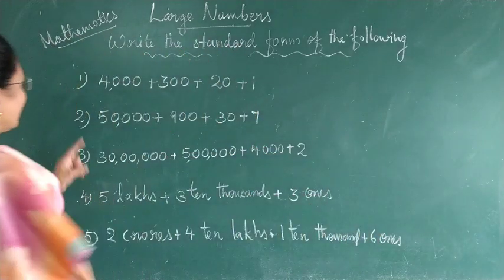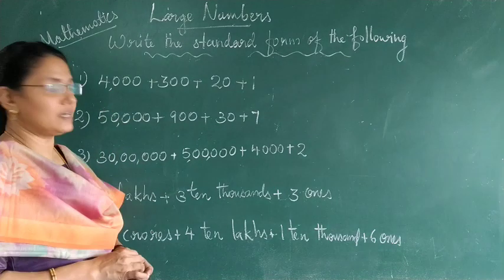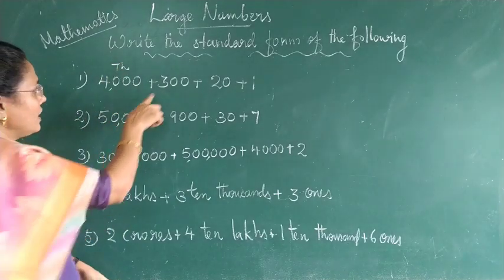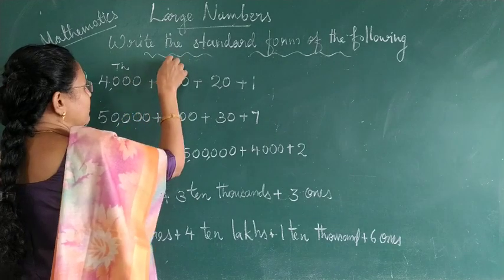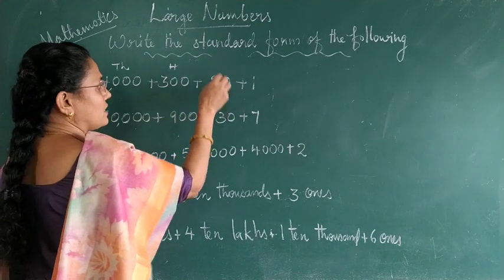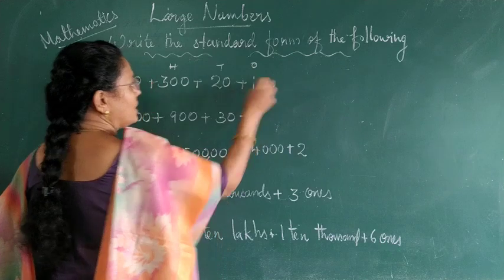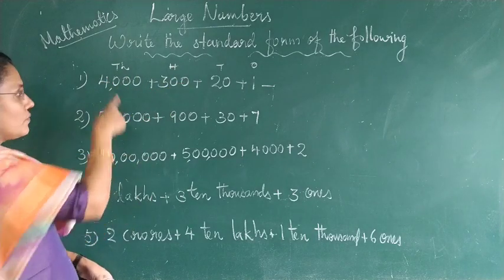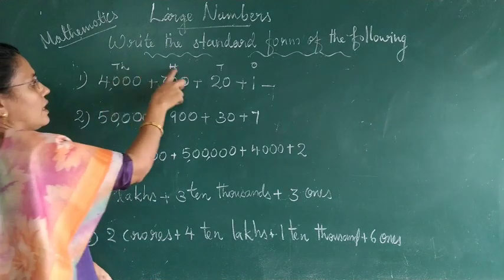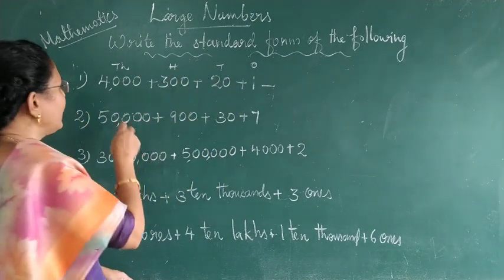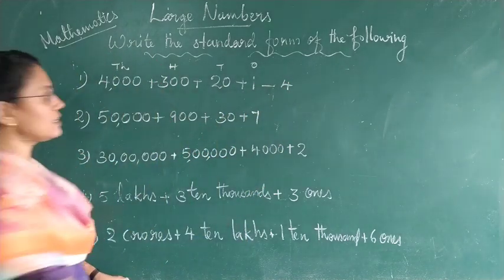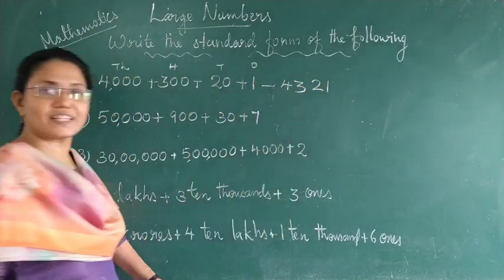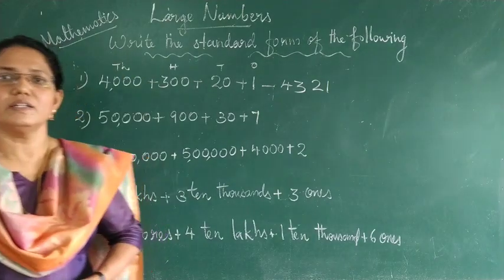Now we can start the first question. The first question is 4000 plus 300 plus 20 plus 1. Here the 1000s place is given; the digit is 4. Next, the 100s place is given; the digit is 3. 20 means 2 tens, so the 10s place is given. Next, the 1s place is given. All places are there, so we can write the answer: the digit in 1000s is 4, in 100s is 3, in 10s is 2, and in 1s is 1. Therefore the number is 4321.